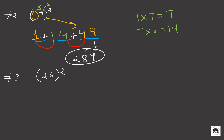Now to find out the square of 26, similarly we first mark 3 blanks here. For the first blank, we square the first digit number which is 2. So 2 squared is equal to 4, so we will write down 4 here. Now for the last blank, we will just square the number 6. So 6 squared is equal to 36.